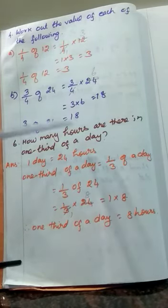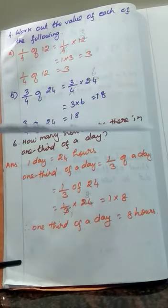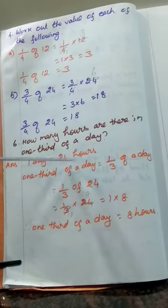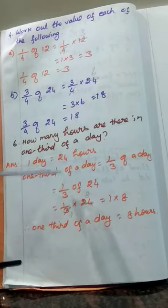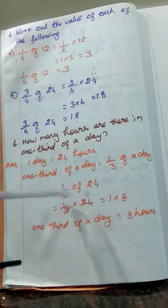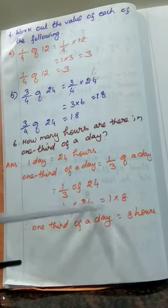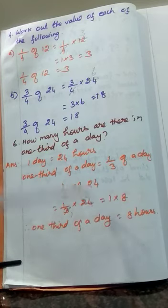Statement sum: 'How many hours are there in one third of a day?' First write: 1 day equals 24 hours. One third of a day is given. So 1 by 3 of a day equals 1 by 3 of 24 — replacing 'day' with 24 hours. So 1 by 3 into 24. Strike out 3 and 24: 1 three is 3, and 8 threes are 24. So 1 into 8 equals 8. Therefore, 1 third of a day equals 8 hours.